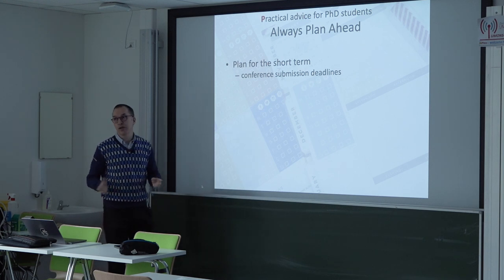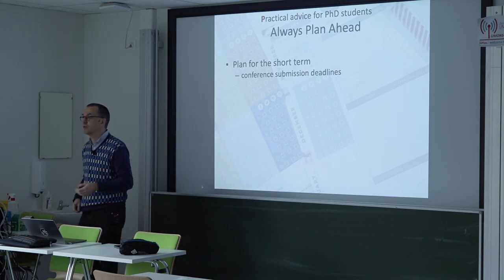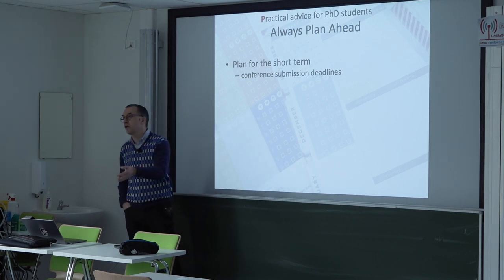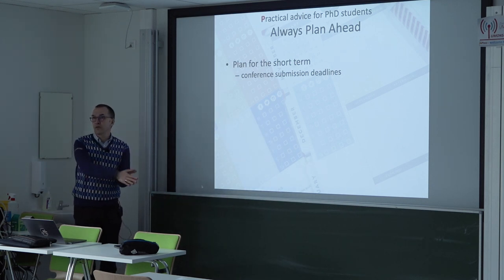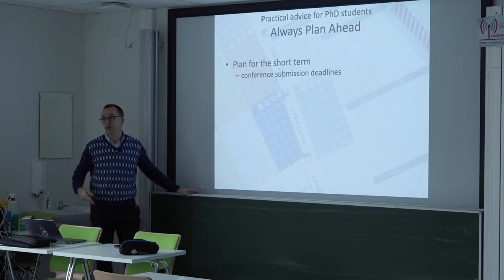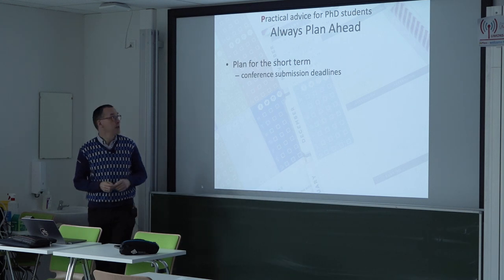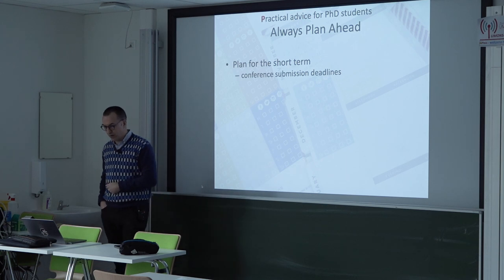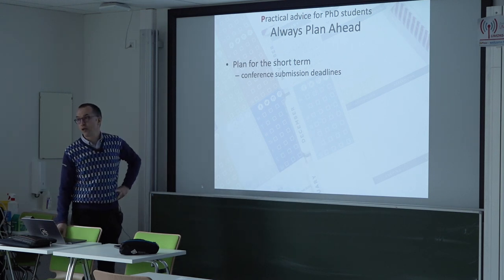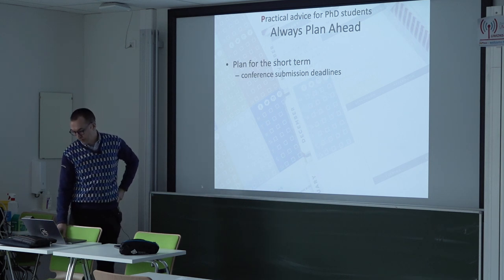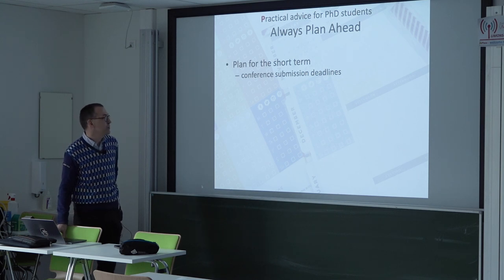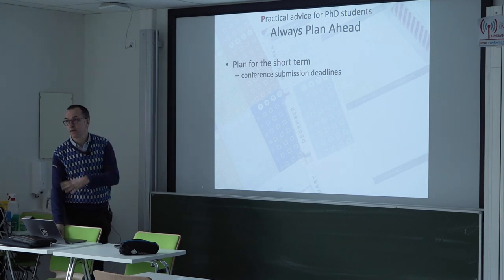Short-term planning: every year there are major conferences in your field with submission deadlines. Plan backwards from the deadline — you may need to start working six to nine months in advance to have results ready. If you only discover a conference two weeks before the deadline, it's too late. Short-term here still means several months ahead.